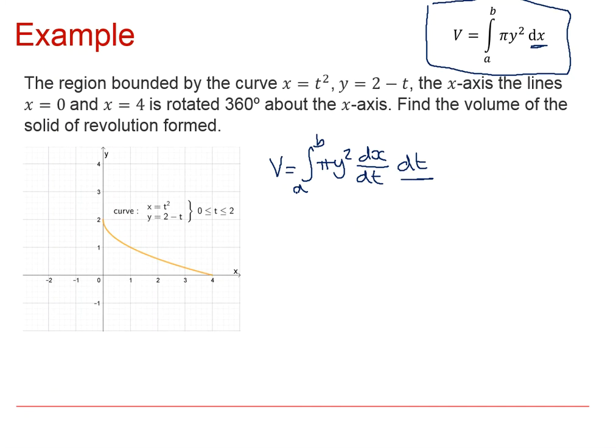Now, remember, our limits here are in terms of X. So we're going to need to change them so that there are limits in terms of T because our integration is going to be with respect to T. So when X equals 0, T equals 0. And when X equals 4, T equals 2.